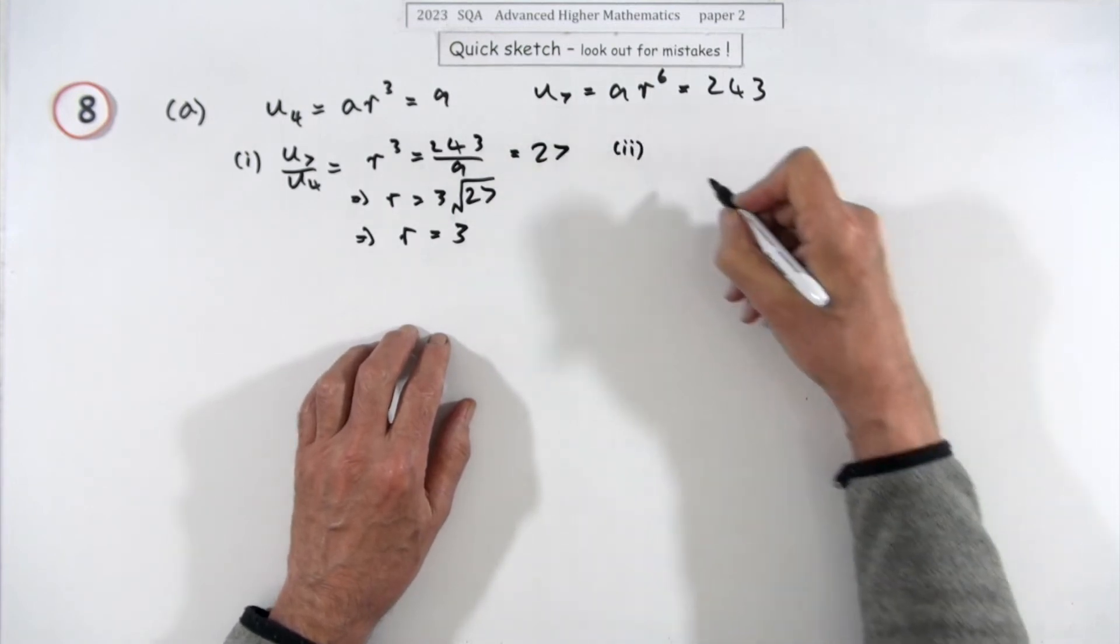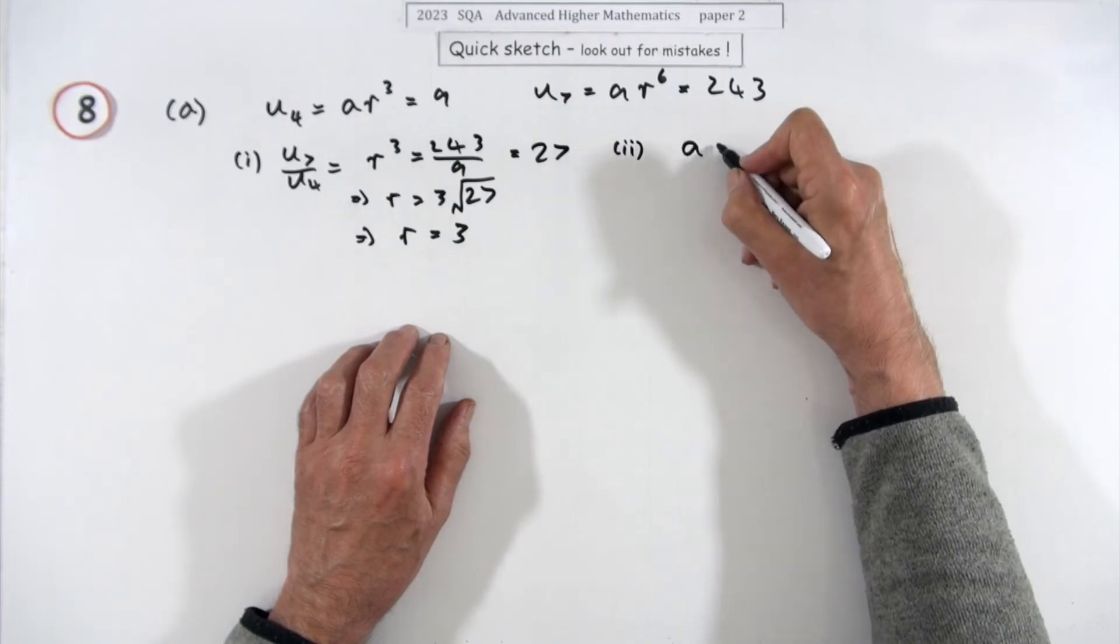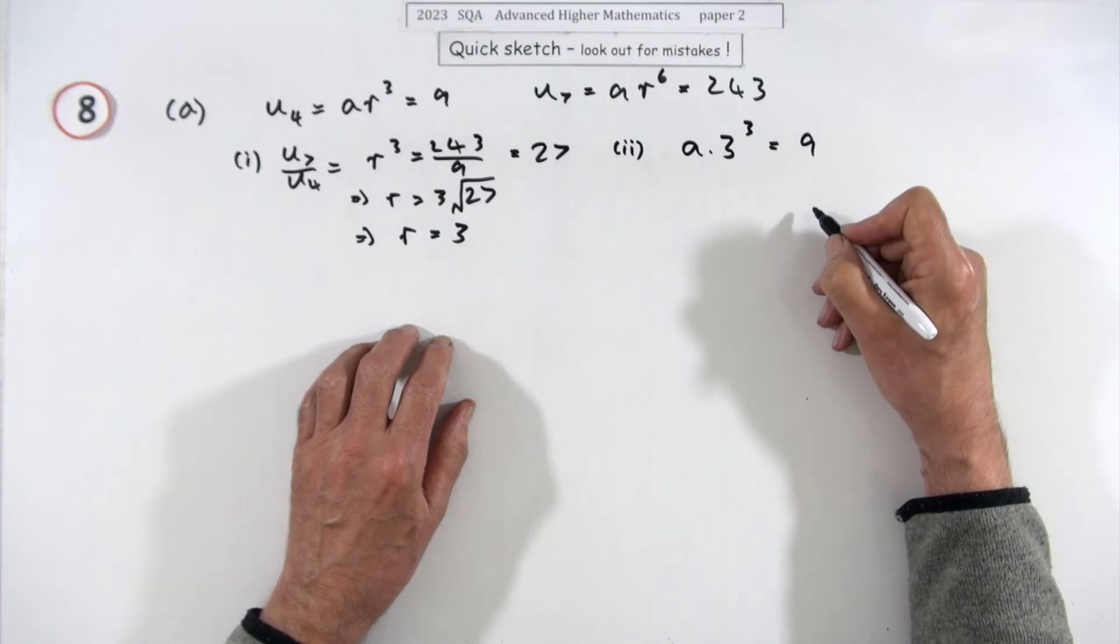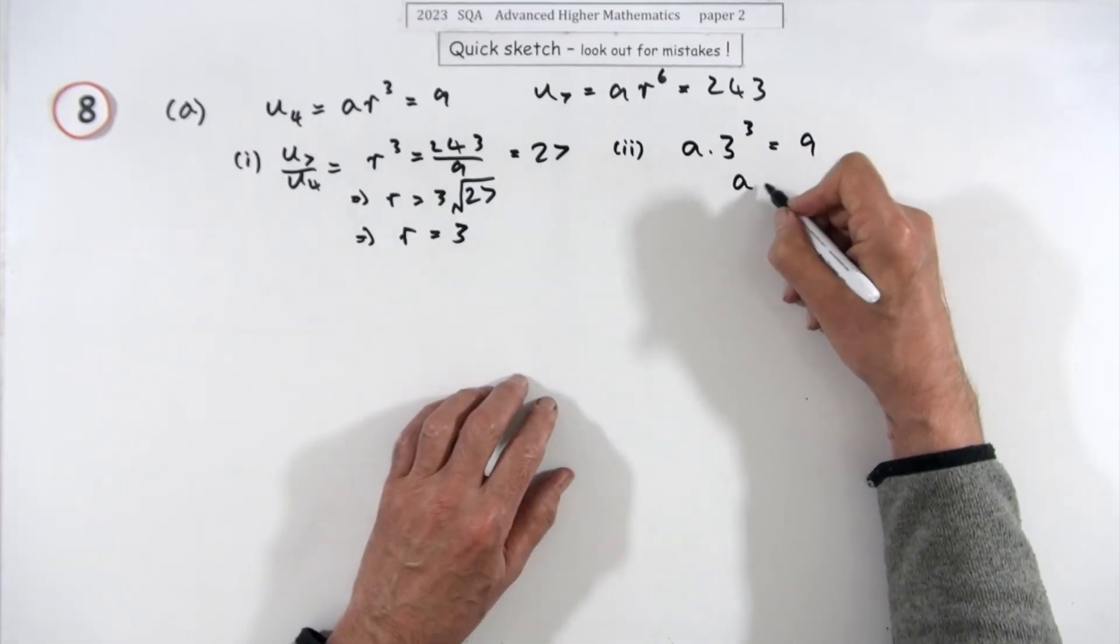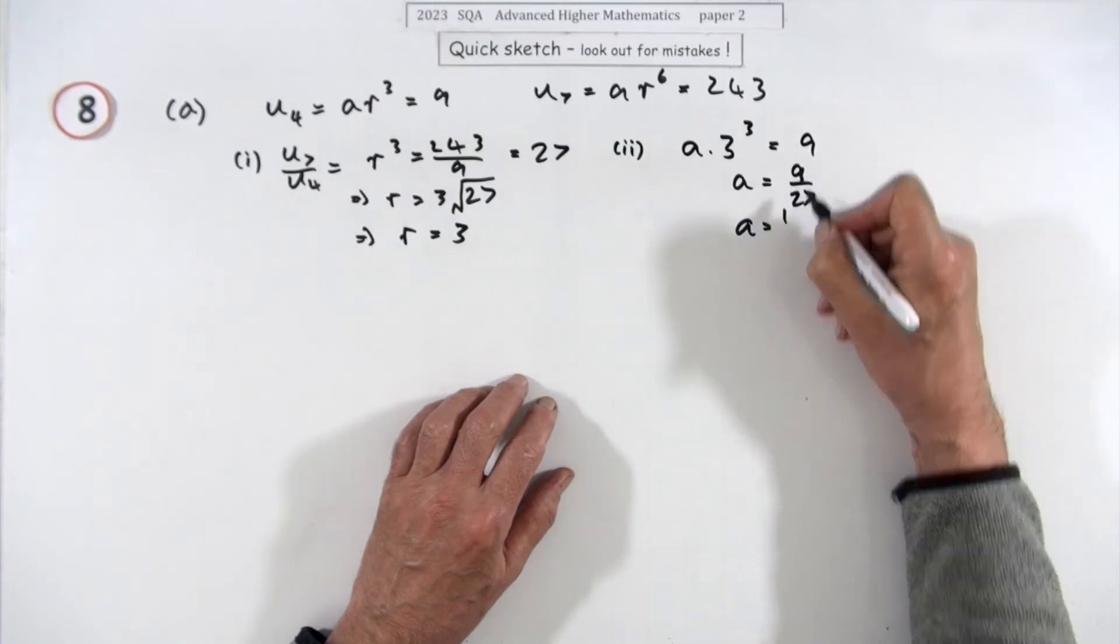Then, what's the common ratio? We'll just put it back in again. You know that a times 3 cubed should be 9, using the fourth term. So that means a is going to be 9 over 27, so a is going to be a third.